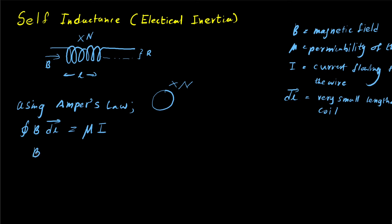If we substitute, the total length of the coil will be L, giving us B·L = μ·I·N. Solving for B, we get B = μIN/L. In this case, since we have an air core, we use μ₀. Now that we have the magnetic field inside the core, we can find the self-inductance of the coil.